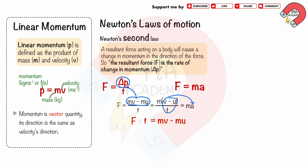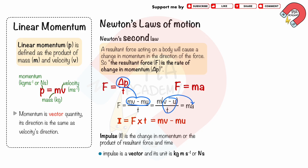From this equation, t moves to multiply with F. The product of F and t is defined as the impulse, I. So the impulse is the change in momentum, or the product of resultant force and time. The impulse is a vector quantity, and its unit is the same as momentum's unit.